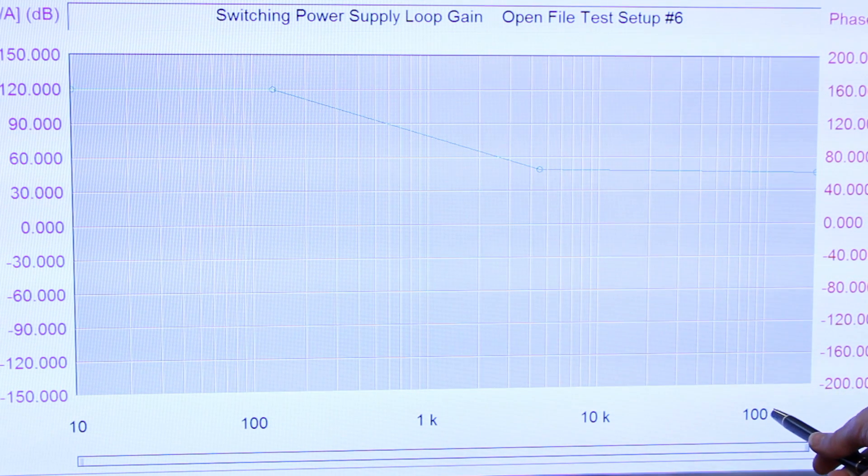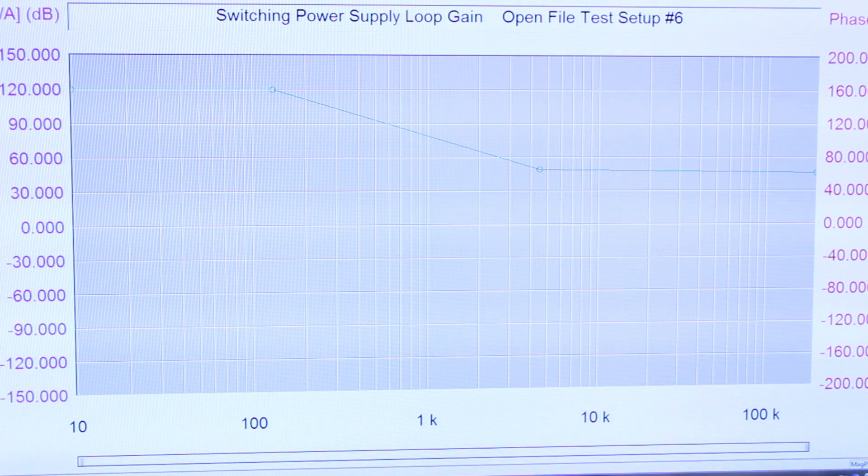And sweep all the way out to 200 kilohertz in this case, and that's for a 100 kilohertz switcher. And that's just because I like to capture the switching frequency on the loop gain plot. So let's start the sweep.